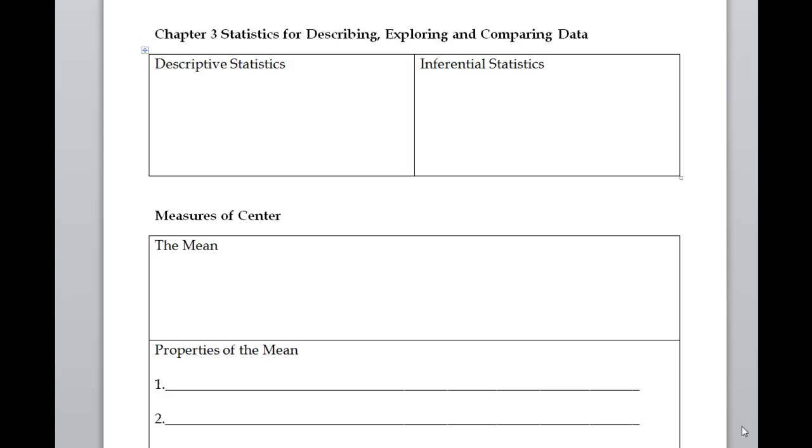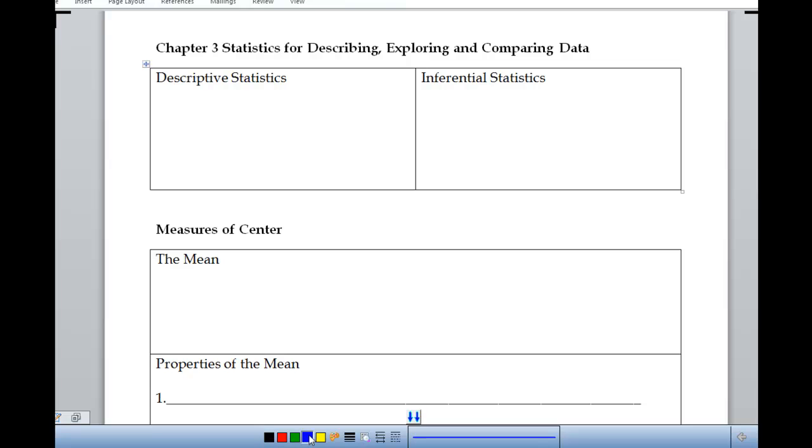In chapter one, we talked about what statistics is and how to design an experiment and how to collect data. Chapter two, we're at the point where we've got some data in our hand and we need to make a picture of that data. Now we're in chapter three where we want to figure out some numerical values that help us to describe the data. And what we're doing right now is what's called descriptive statistics. Descriptive statistics describes what we know about the sample data.